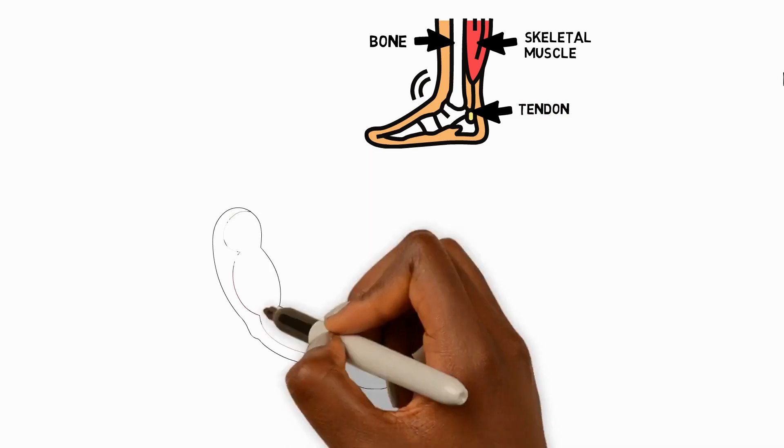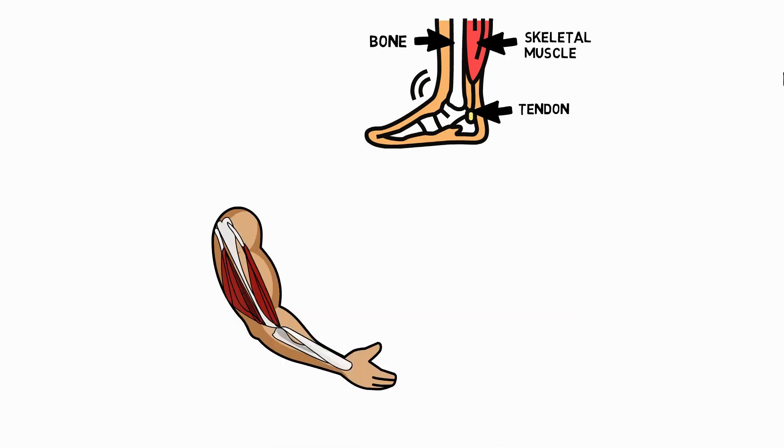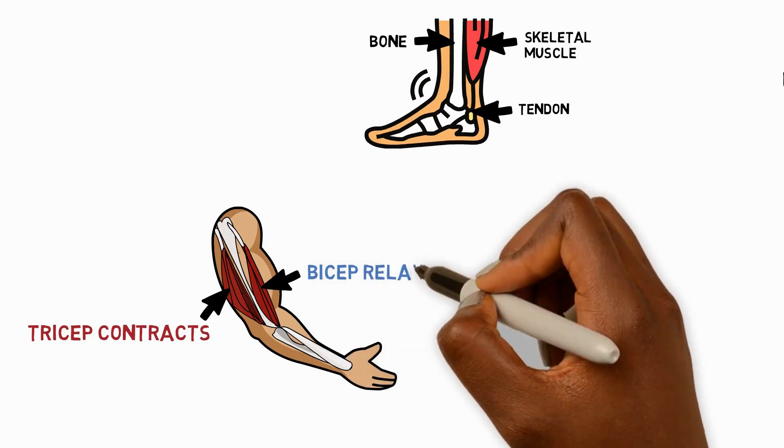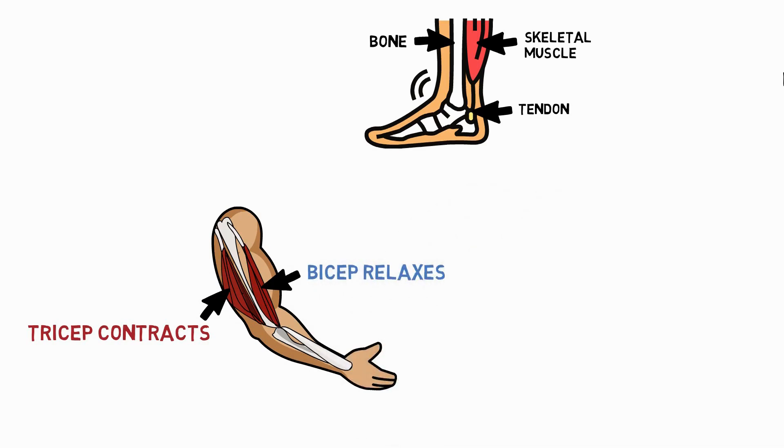For example, when we relax our arm, the tricep muscle at the back of the arm contracts. It gets shorter and fatter and pulls on the bone. The bicep at the front of the arm relaxes, and the arm moves down at the joint.